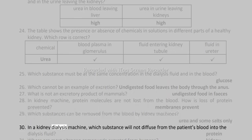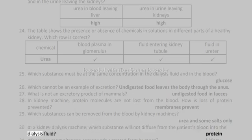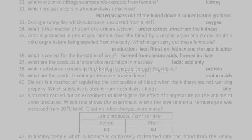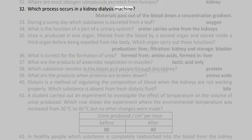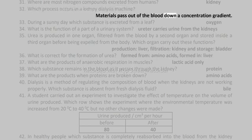30. In a kidney dialysis machine, which substance will not diffuse from the patient's blood into the dialysis fluid? Protein. 31. Where are most nitrogen compounds excreted from humans? Kidney. 32. Which process occurs in a kidney dialysis machine? Materials pass out of the blood down a concentration gradient.